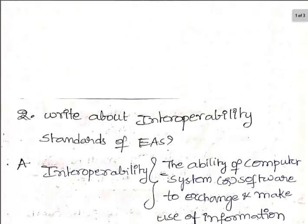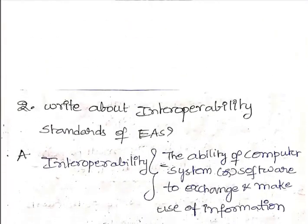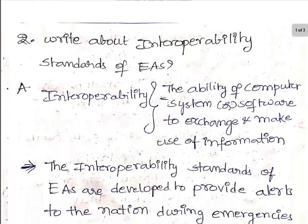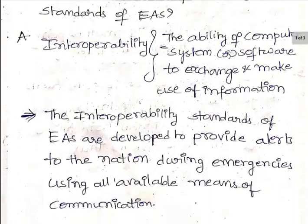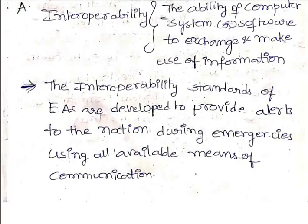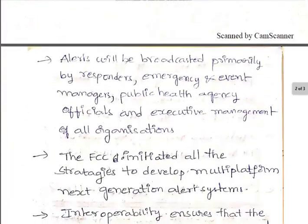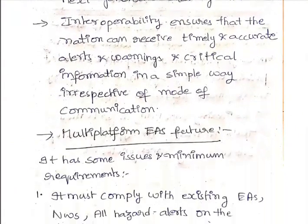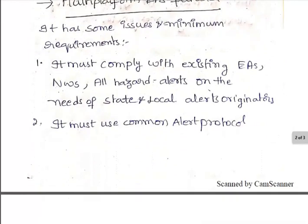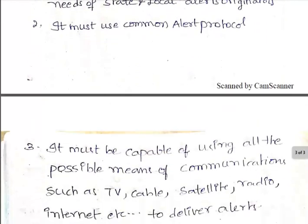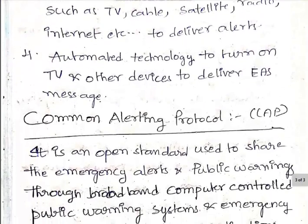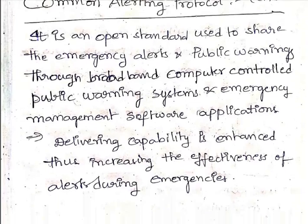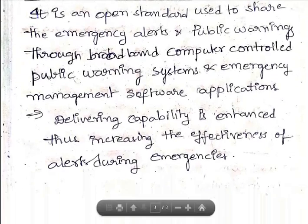To summarize, interoperability is the ability of a computer system to exchange information and make use of that exchanged information. We discussed the standards it must maintain to provide alerts, the modes of communication used to generate alerts, the future of the multi-platform Emergency Alert System, the requirement to follow a Common Alert Protocol, and finally, CAP as an open standard used to deliver emergency alerts and warnings. Thank you for watching this video; we will be back with the next video.